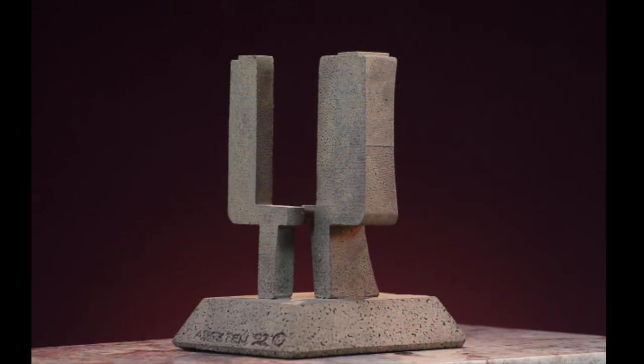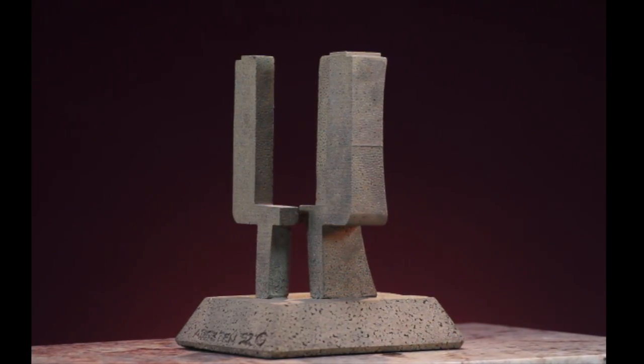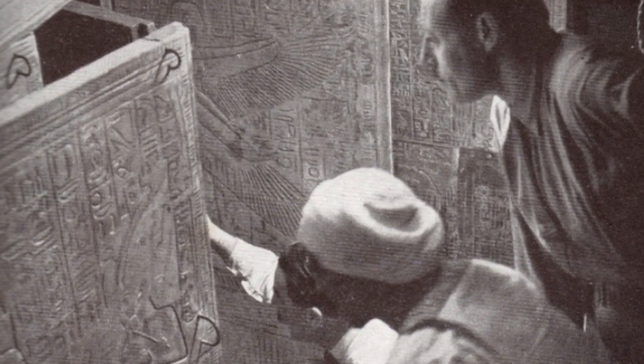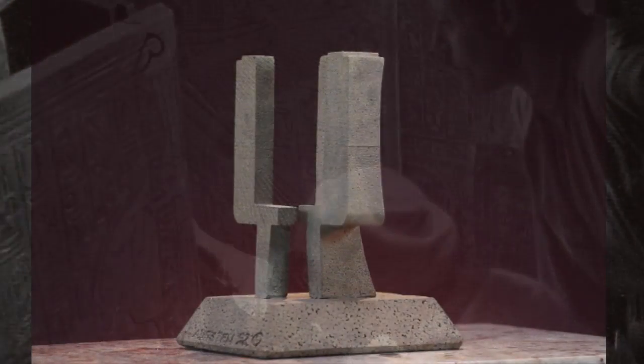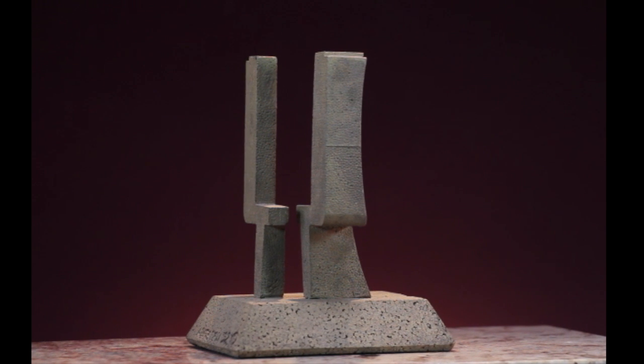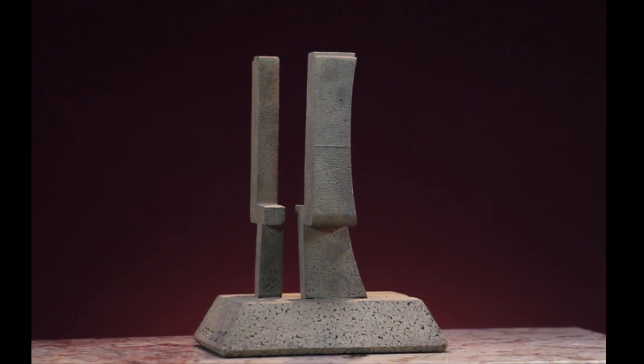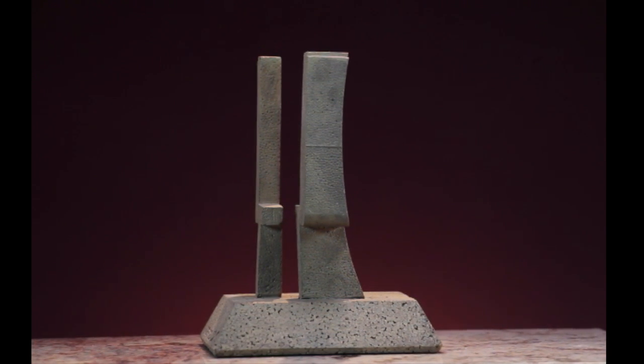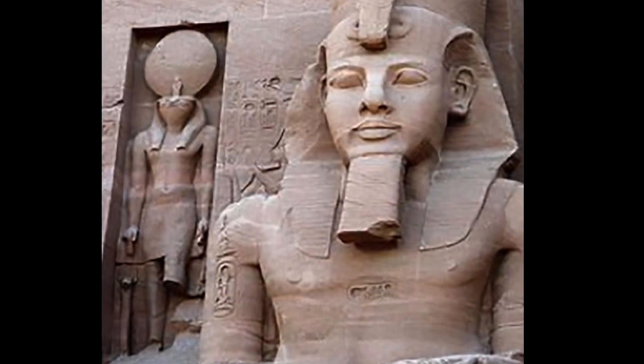They got hieroglyphs all over everything, and there's one symbol that I don't remember what it's called right now, but it is the signature of the king. When you see that, it means King Tut. It's his particular symbol. So that's what this is to me.